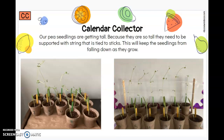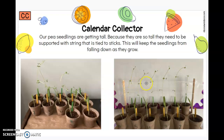We can see from the pictures that our seedlings are getting really tall. Our pea seedlings are falling all over, so because they are so tall they need to be supported with string tied to a stick. This will keep the seedlings from falling down as they grow, and it will also let them grow because they're just resting in between the string — it's not holding them back from growing.